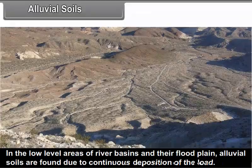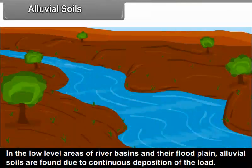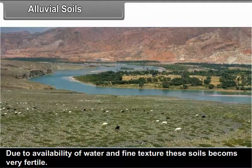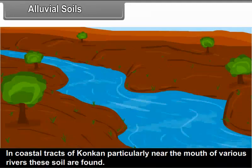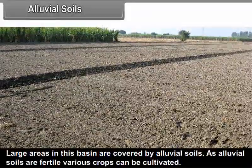Alluvial soils: In the low-level areas of river basins and their flood plains, alluvial soils are found due to continuous deposition of load. Due to availability of water and fine texture, these soils become very fertile. In Maharashtra, these soils dominate the lower reaches of main rivers. In the coastal tracts of Konkan, particularly near the mouth of various rivers, these soils are found. In North Maharashtra, the basins of Tapi and Purna are full of deep alluvial deposits, and large areas in this basin are covered by alluvial soils. As alluvial soils are fertile, various crops can be cultivated.